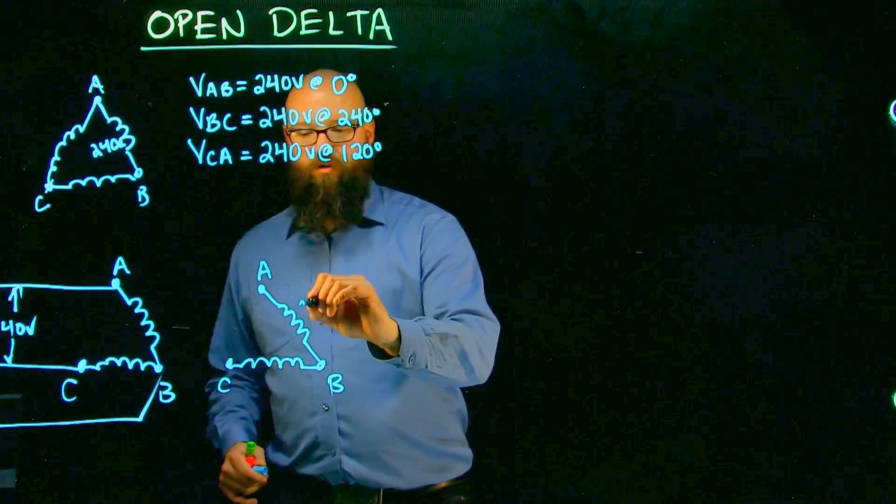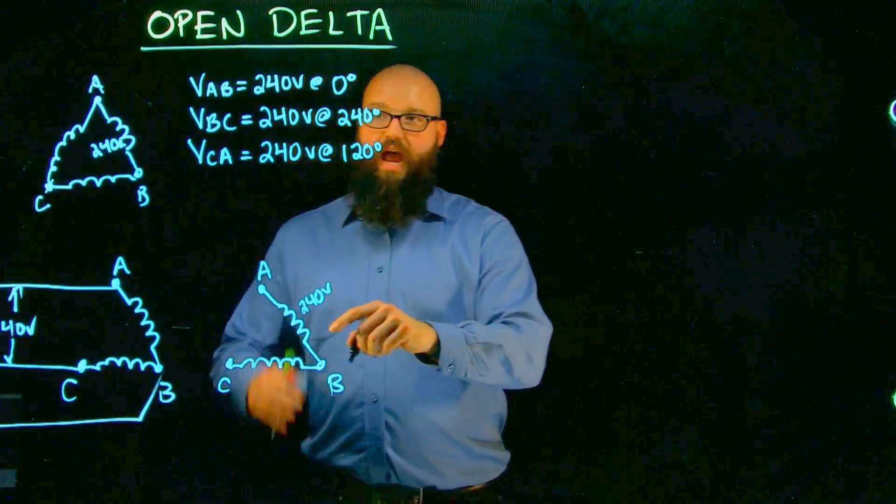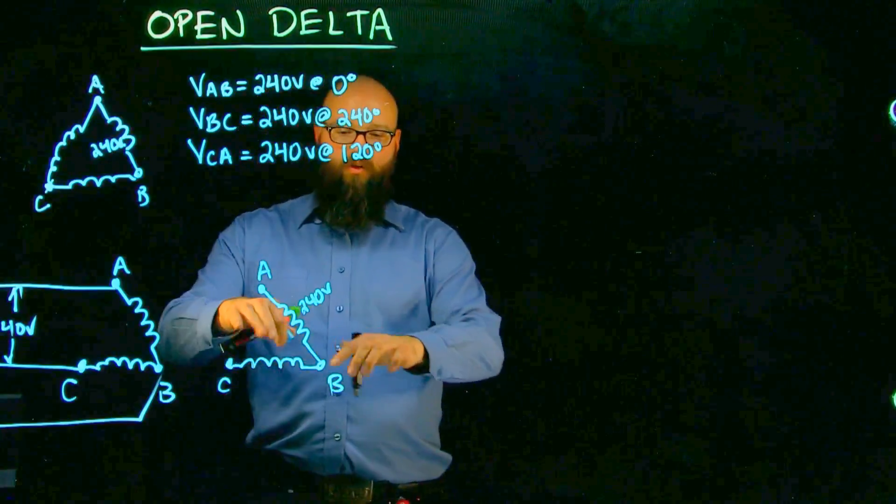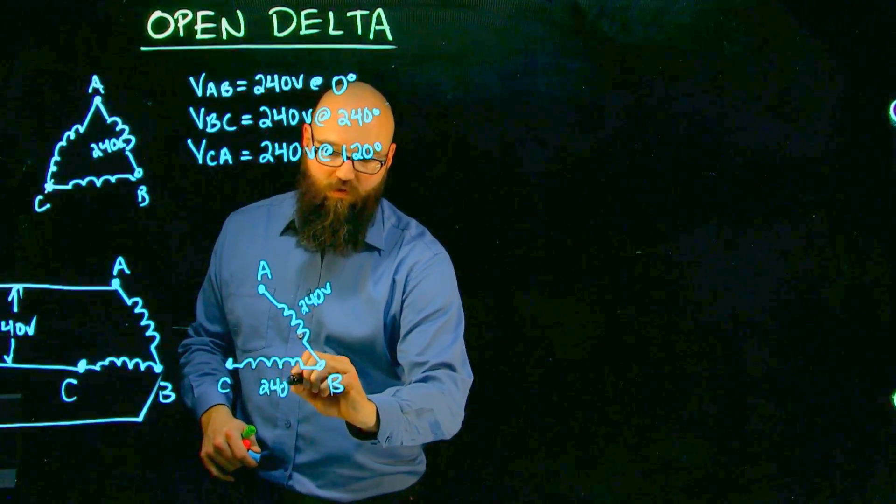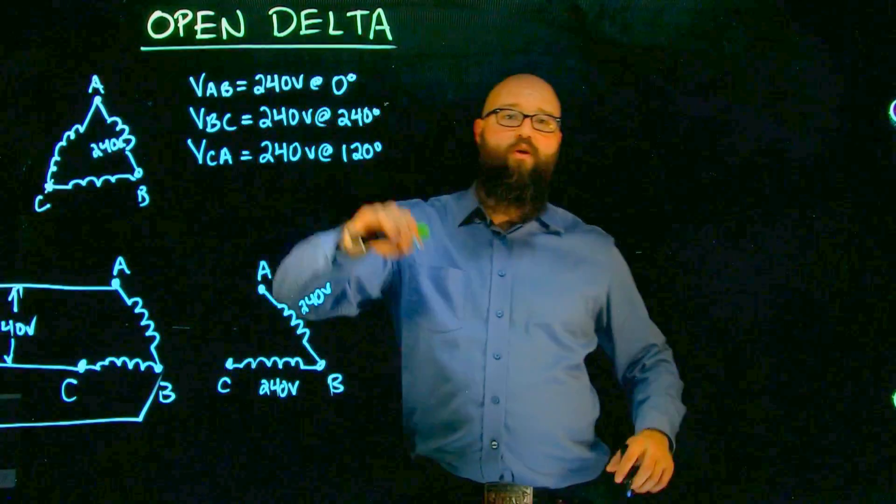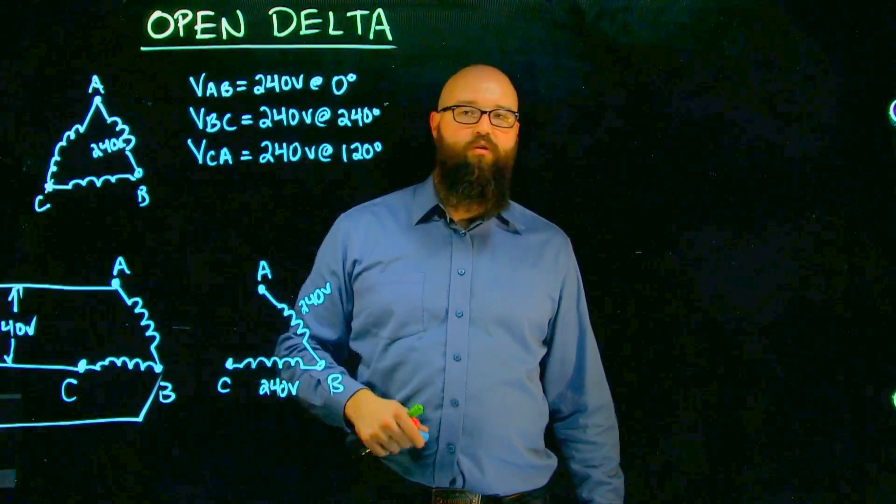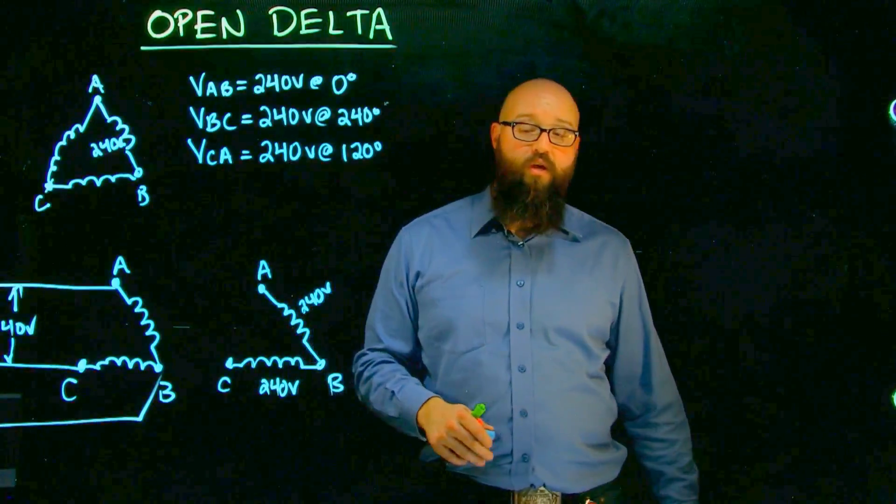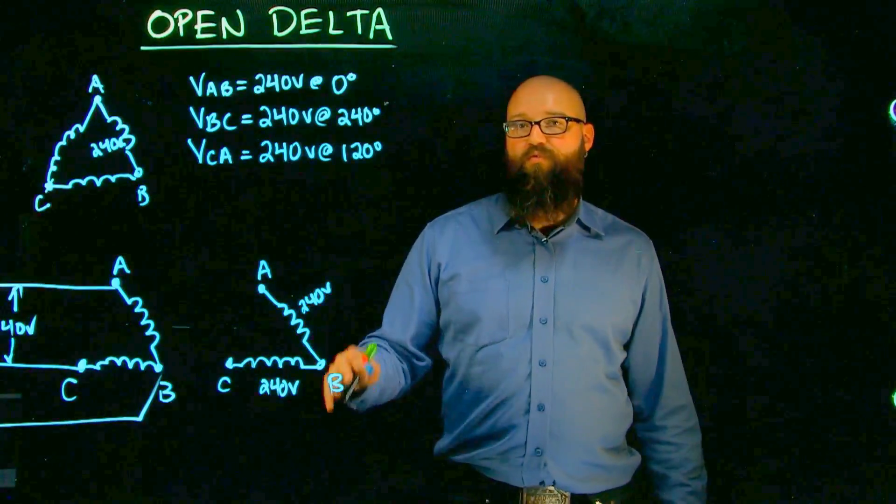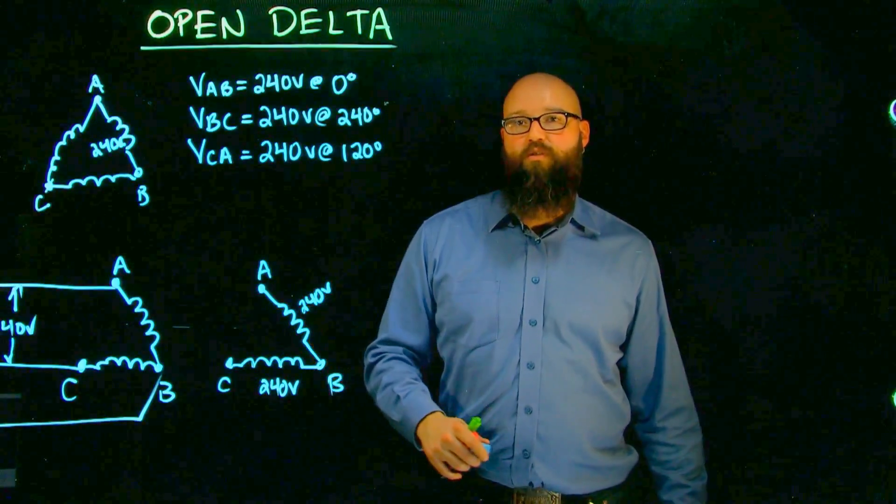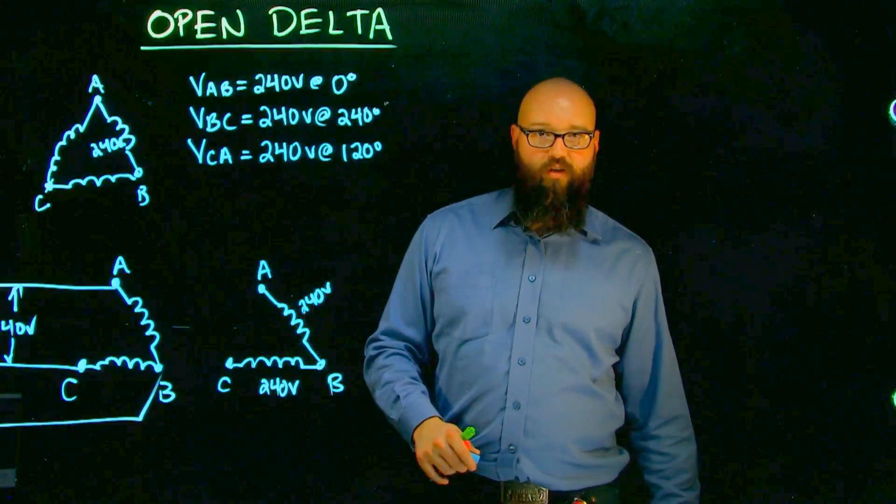We still have our 240 volts at 0 degrees. We still have our 240 volts at 240 degrees. What was lost, though, was this V C to A, which was 240 volts at 120 degrees. But what we're going to do right now is prove that that is still there and available to us as a voltage from our transformer.